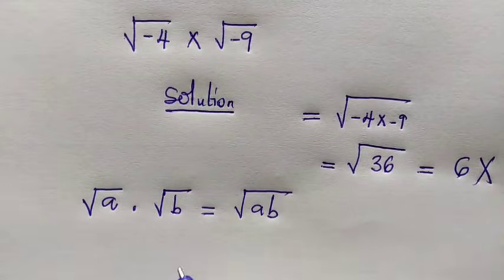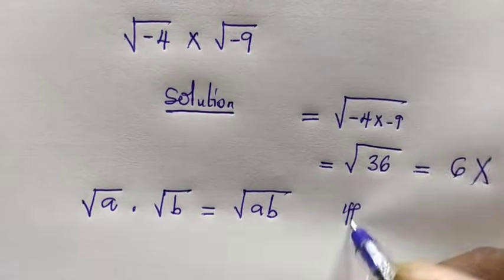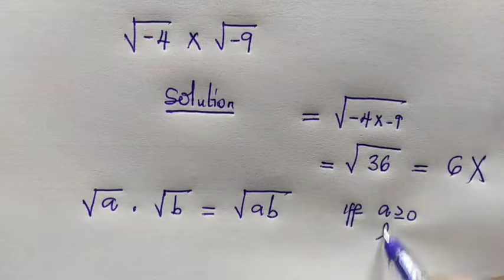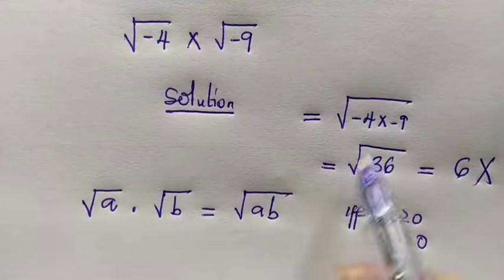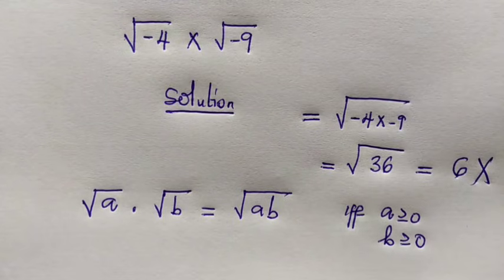this property holds only if A is greater than or equal to 0 and B is greater than or equal to 0, and this does not hold for negative numbers. You get the idea?